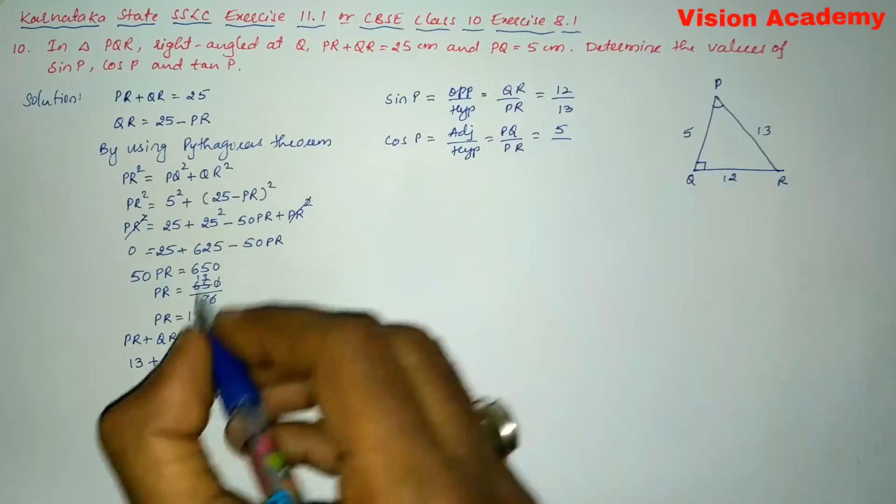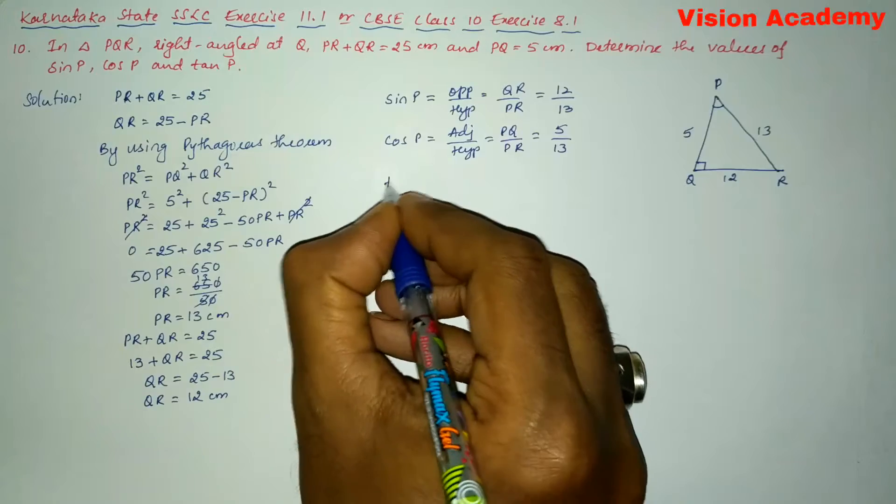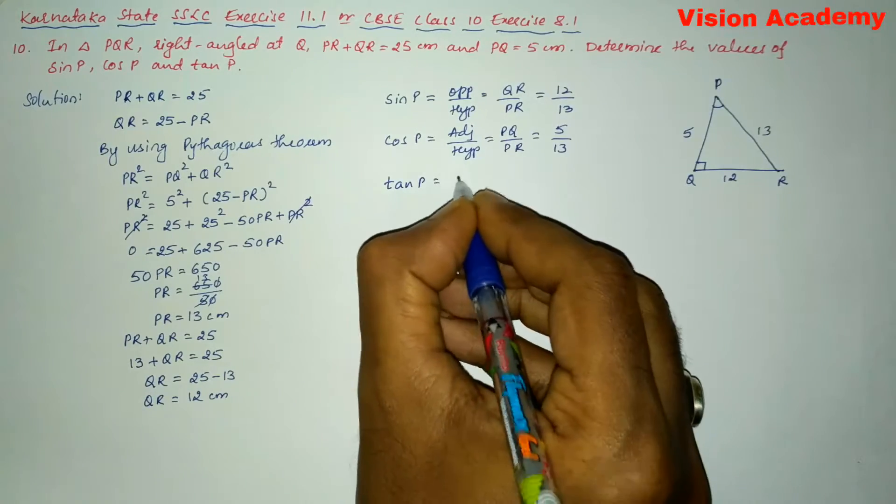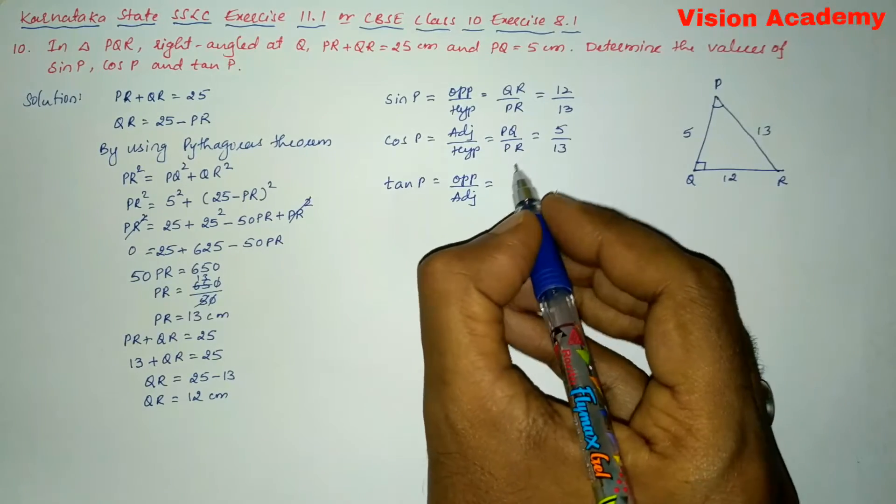Now we will write tan P. Tan P is equal to opposite by adjacent, so here we can write opposite to angle P is QR and adjacent is PQ.